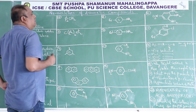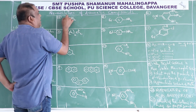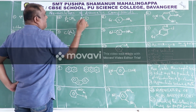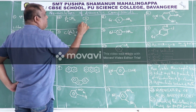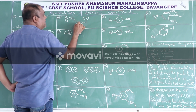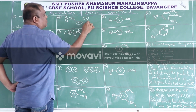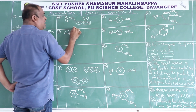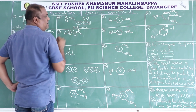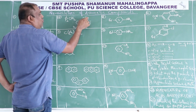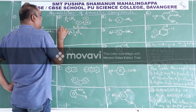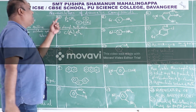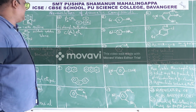Here phi means benzene ring attached to C, another phi means another benzene ring, then H2. This is the main chain having only one carbon, so root word is meth, primary suffix is ane. Two phenyl groups are attached to this carbon, therefore the IUPAC name of compound number 6 is diphenylmethane.